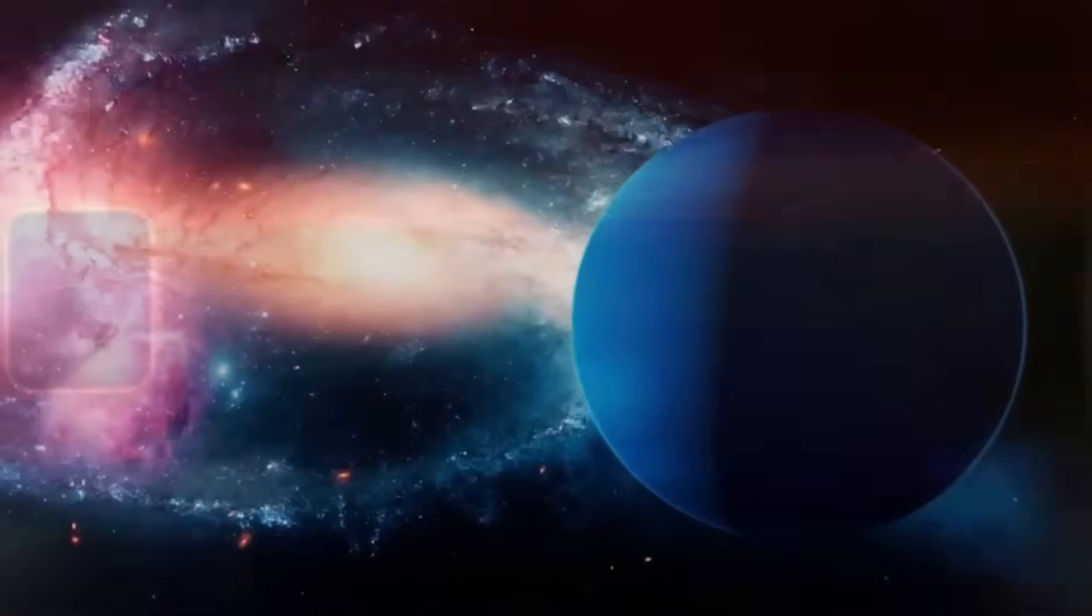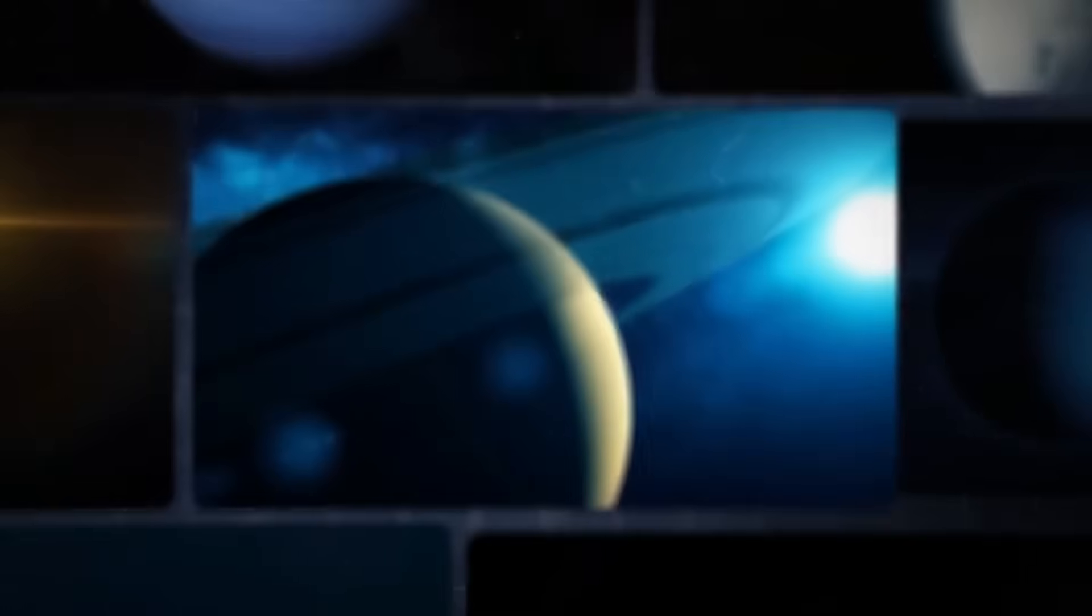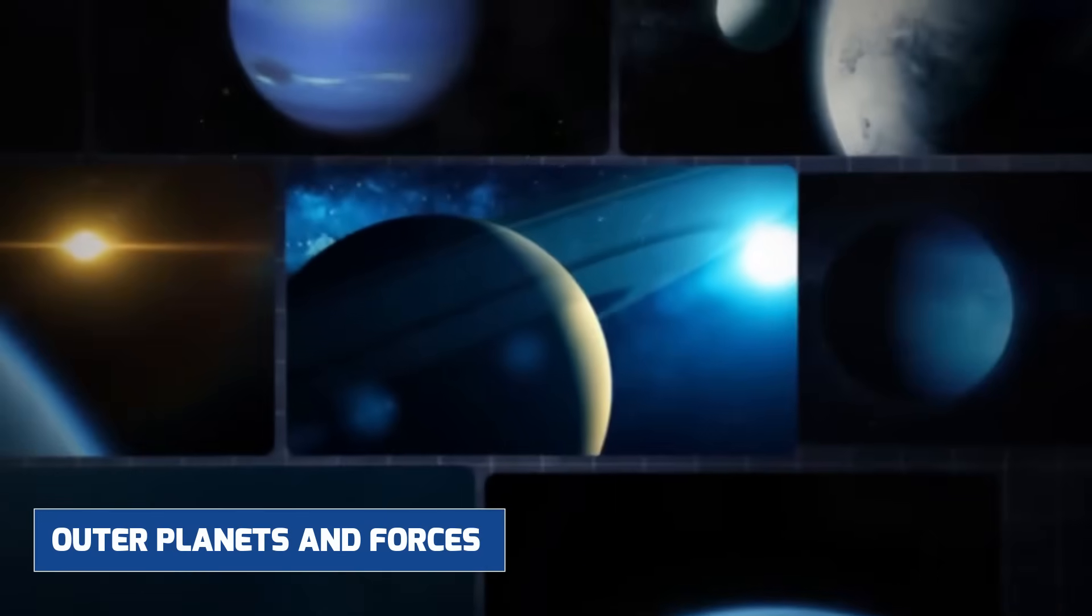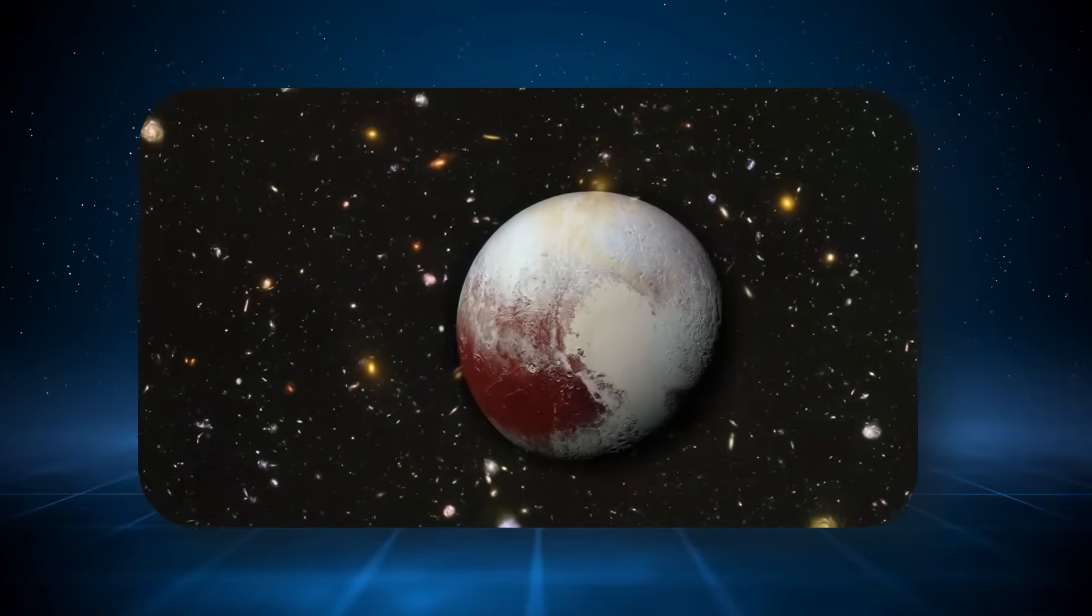This time, he's turned our collective gaze toward the distant planet Neptune. In a recent revelation that sent ripples through both academic circles and popular media, Tyson unveiled new insights suggesting that Neptune might not be what we've long believed it to be. The nature of these findings challenges conventional models of the outer planets and forces a reconsideration of long-standing assumptions in planetary science.